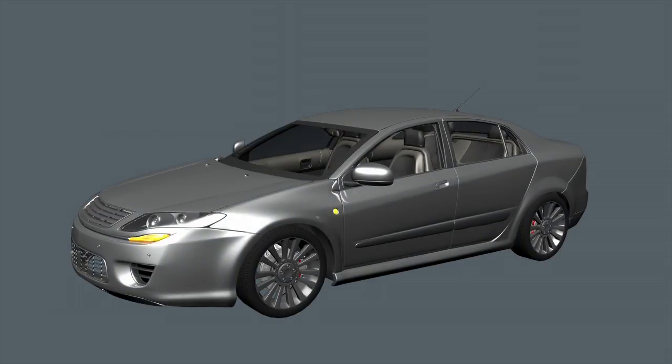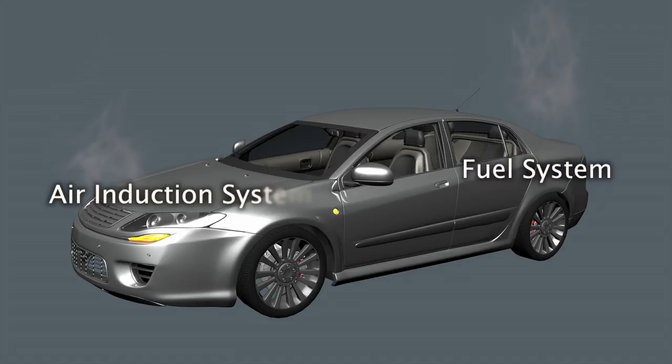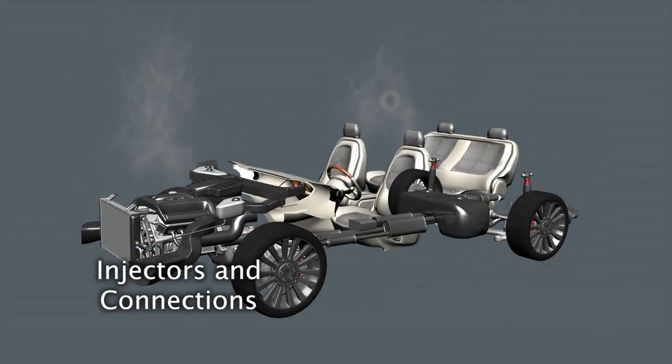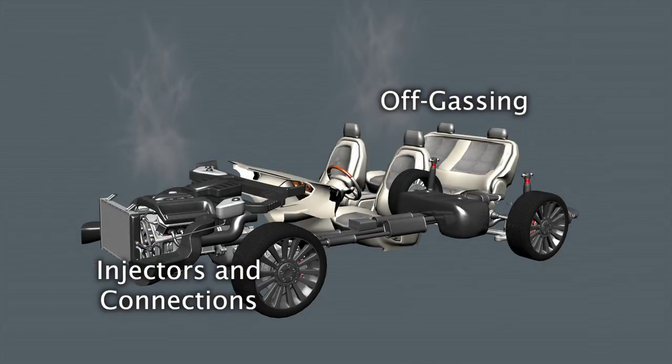Evaporative emissions come from four main mechanisms: the venting of the fuel and air induction system, permeation of fuel tank and hoses, leaks of the injectors and connections, and off-gassing of new components.